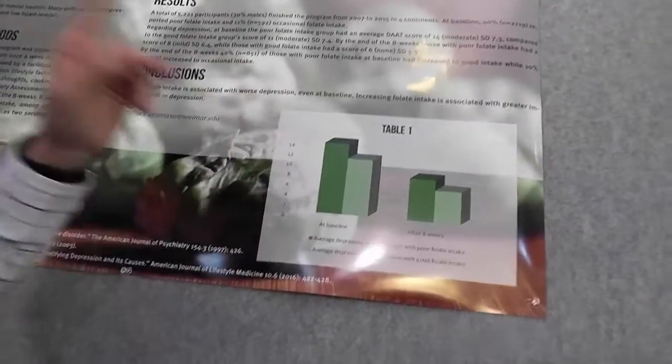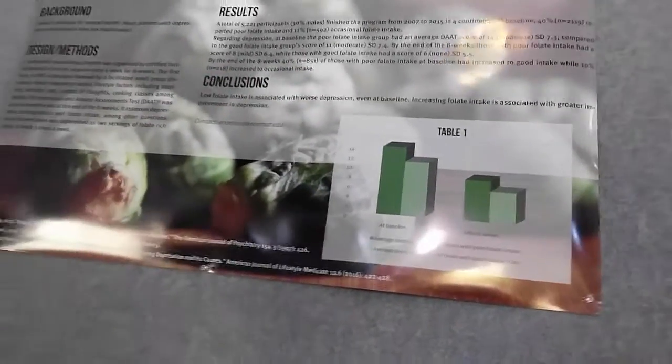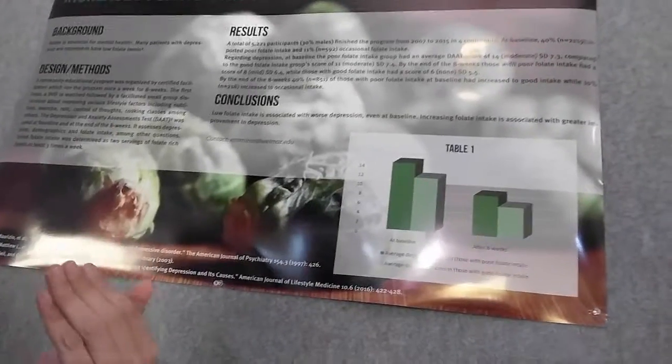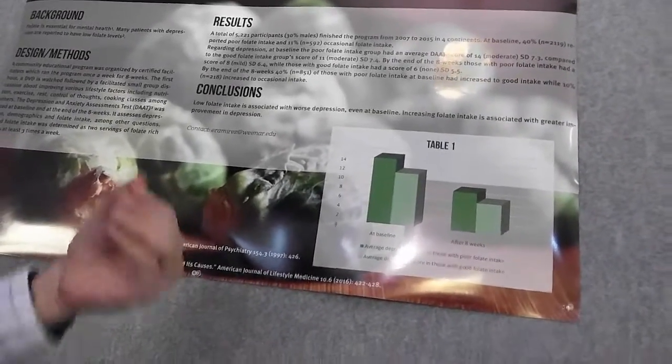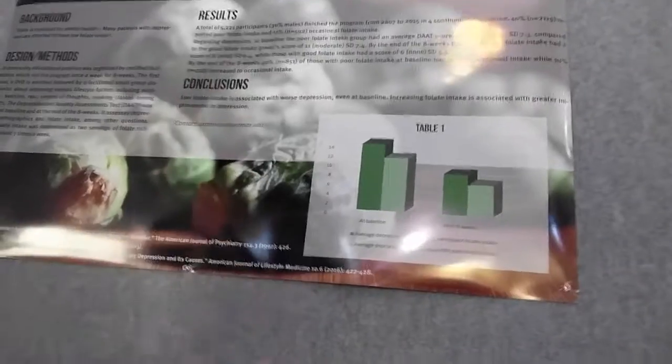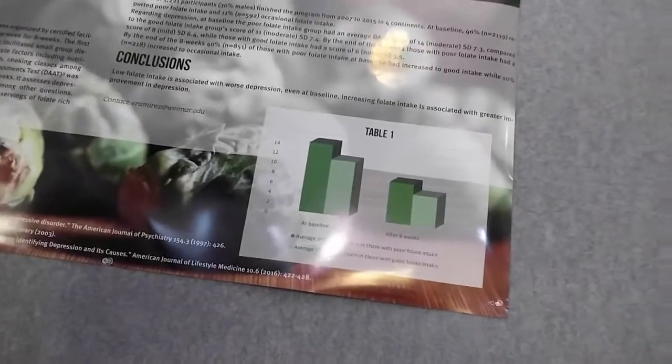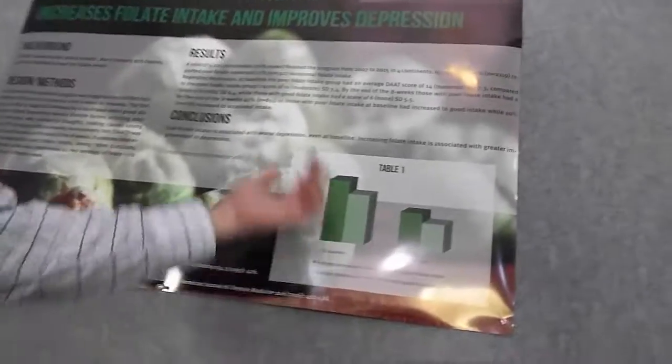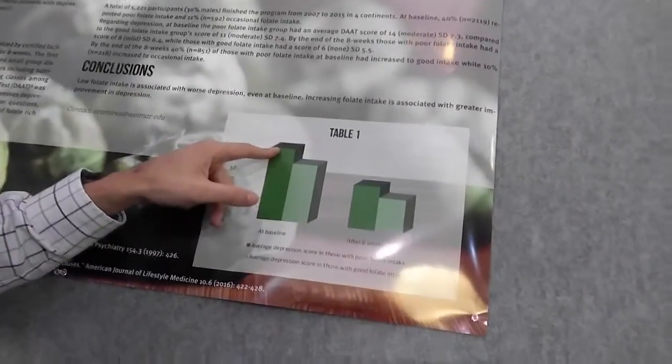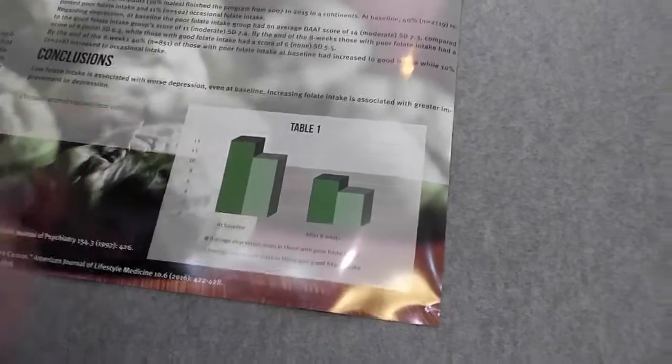What we found out is that those that were deficient at the beginning of the program - how do we know they were deficient? We asked about the foods they're eating, and that's how we found out if they had enough intake. Those that were deficient had higher levels of depression compared to those that were not deficient.